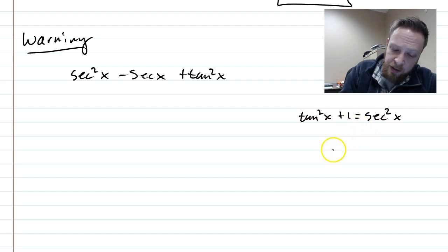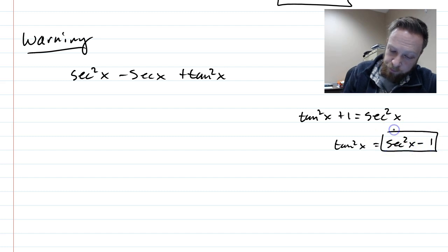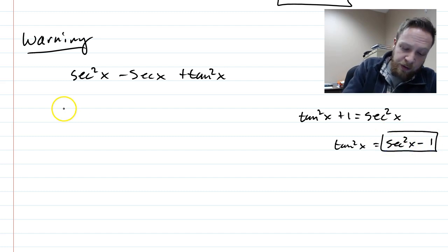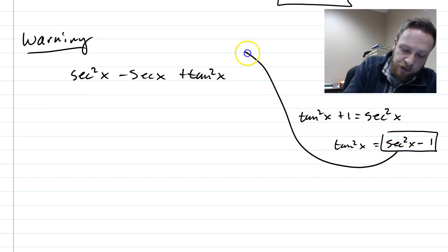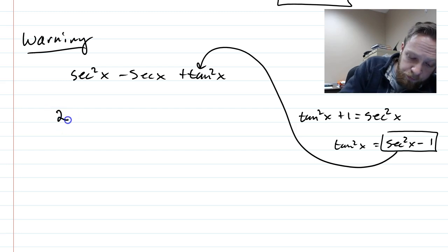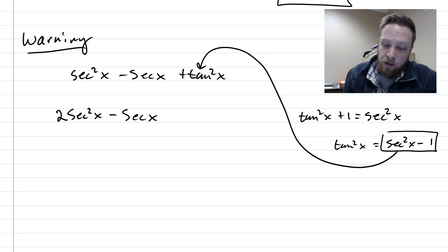So this means that I'm going to subtract the 1 over. And when I see tan squared of x, I'm going to replace it with this. So let's see what happens here. If I bring this over and substitute it in, I'm going to have two secant squareds. I'm going to have one just regular secant x. And then I'm going to have a minus 1 at the end.